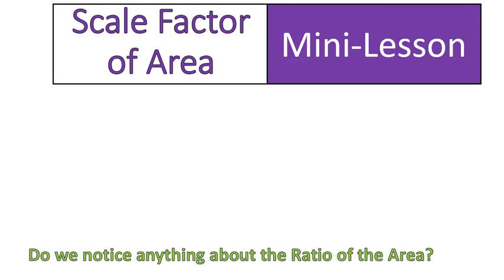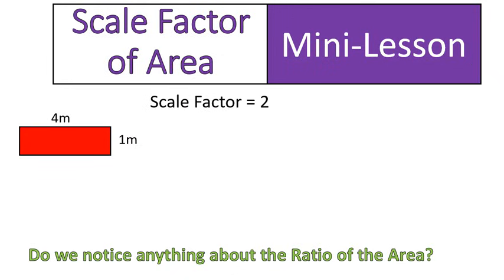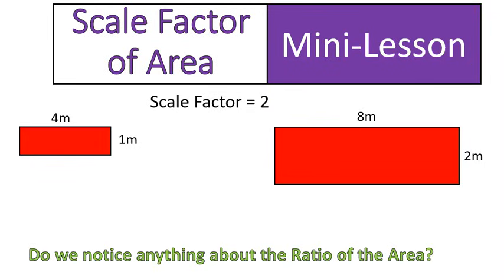First off, we're going to look at the ratio of two figures, and we want to think about anything that we might notice about the ratio of these two areas. So let's pull out a couple of figures here. First off, our familiar red rectangle that's four meters by one meter. If we're given that it has a scale factor of two, this would be our new drawing. These two drawings have a scale factor of two.